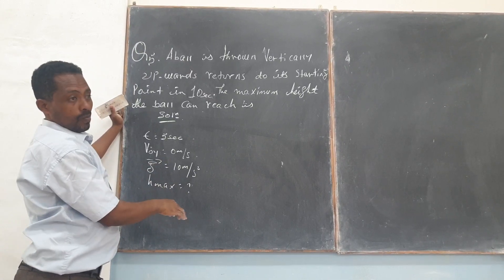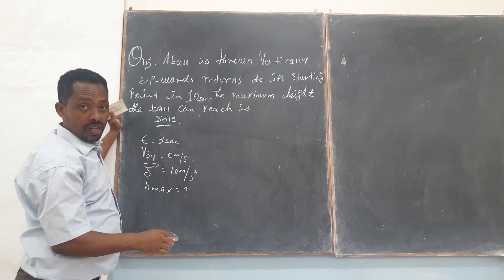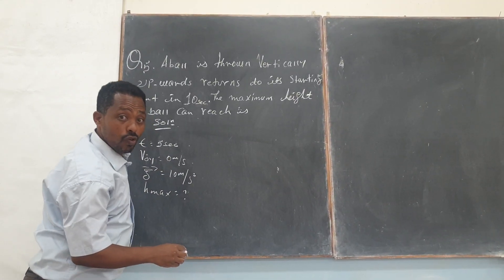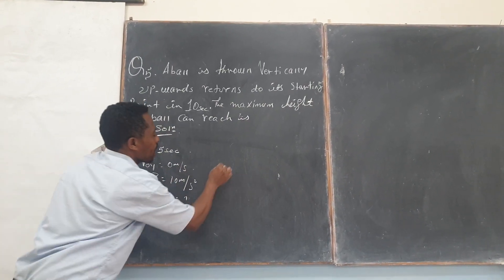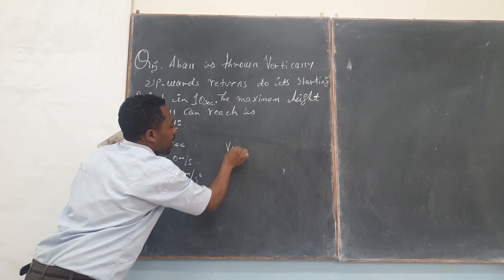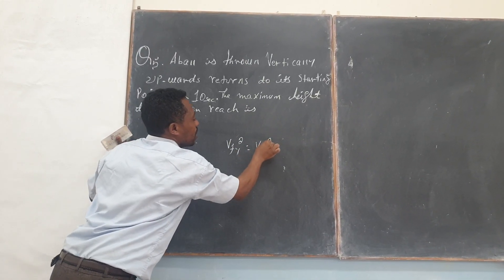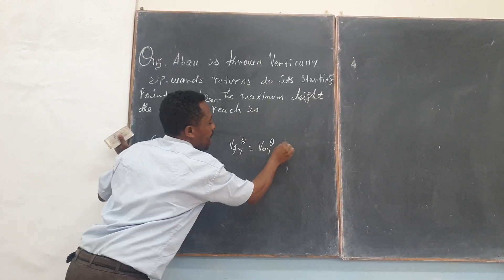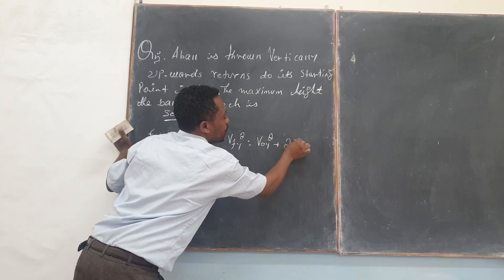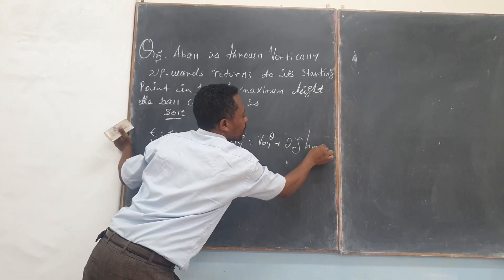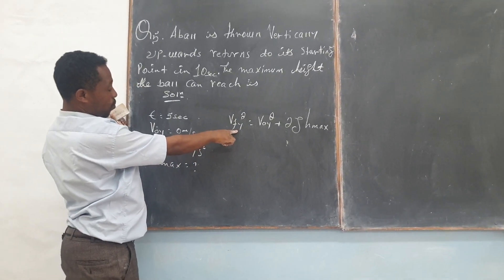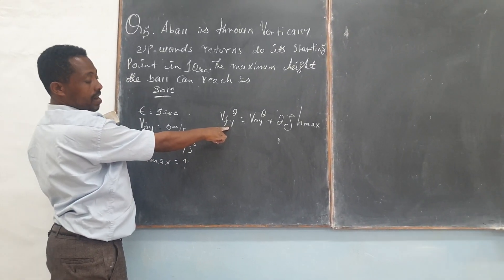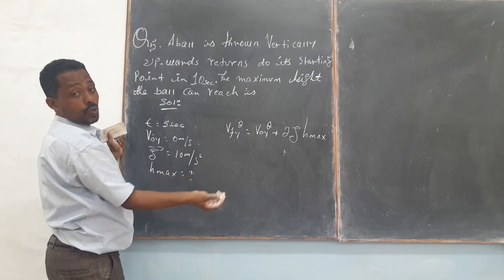To do this problem, we have to use the formula what we have learned in our previous lesson. We know that square of V final equals square of V initial and then plus twice of G H max. We have V final, I mean we don't have V final, but of course we don't have V final, and hence we have to use another formula.